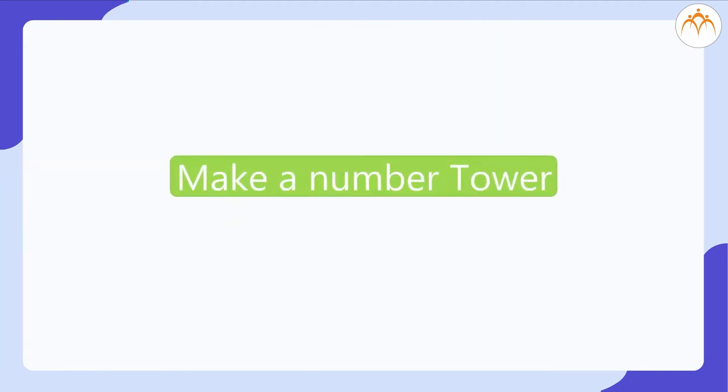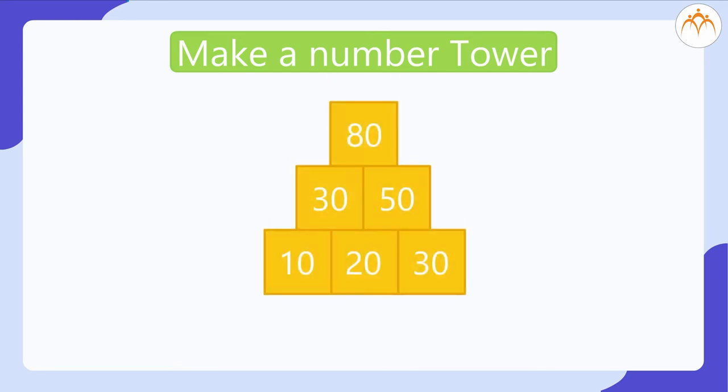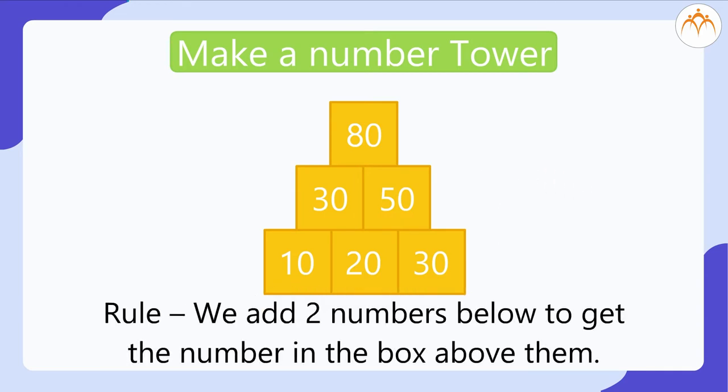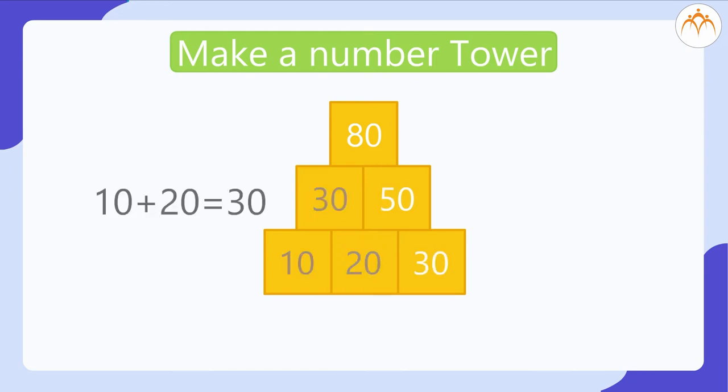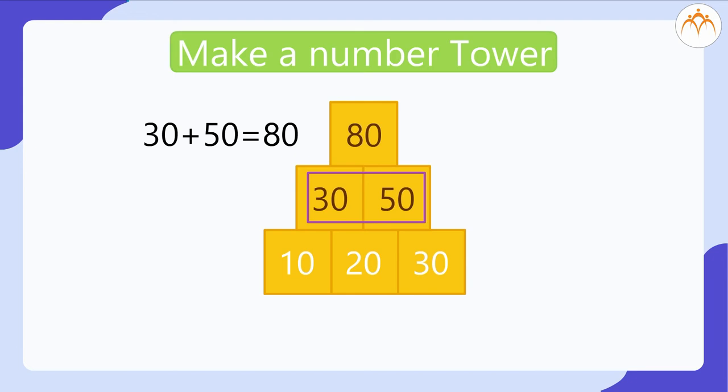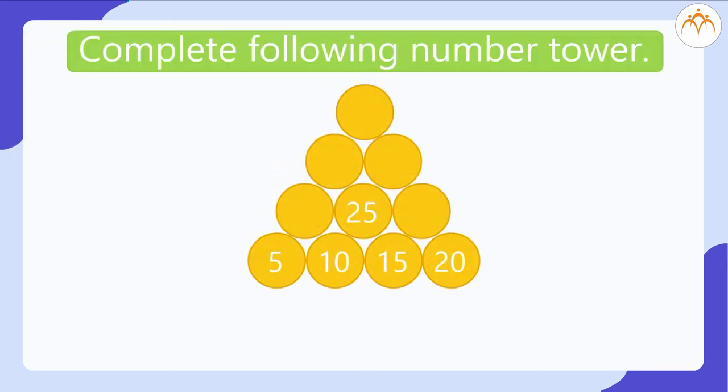Make a number tower. 80, 30, 50, 10, 20, 30. Can you see the rule for this pattern? We add two numbers below to get the number in the box above them. 20 plus 30 is equal to 50. 10 plus 20 is equal to 30. 30 plus 50 is equal to 80. Using same rule, let us complete following number tower.